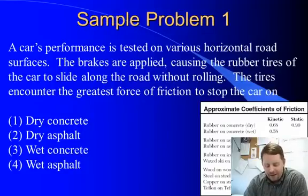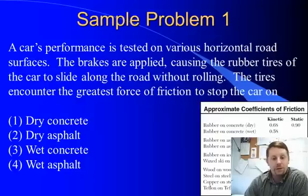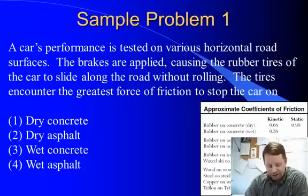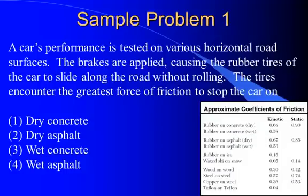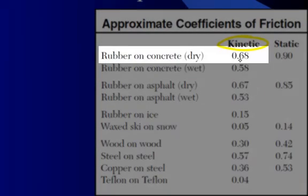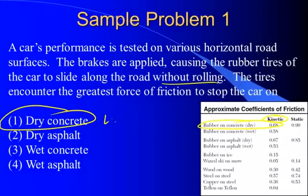Let's put this into practice. We have a car's performance tested on various horizontal road surfaces. The brakes are applied causing the rubber tires to slide along the road without rolling. The car encounters the greatest force of friction to stop on: dry or wet concrete and dry or wet asphalt. Let's use our coefficient of friction table. Because it's sliding without rolling, let's use the kinetic coefficient of friction. Which is the greatest? Which will give you the most friction? In this case, of all the values, the highest one is rubber on dry concrete, 0.68. So our answer must be 1, dry concrete, because you have the largest coefficient of kinetic friction.